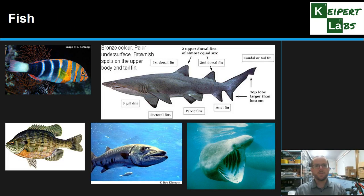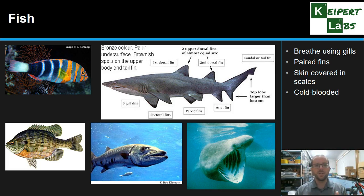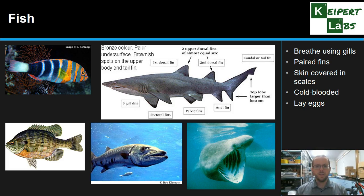Lastly, we have fish. Fish breathe using gills and have paired fins. Their skin is covered in scales, unlike the other vertebrates. They are cold-blooded, with their temperature regulated by the environment — specifically, the temperature of the water dictates their body temperature. This is very energy efficient, but it means water temperature is crucial to a fish's survival. If you've ever had fish in a tank, you know you need to use water at the right temperature or they will die. They lay eggs that are externally fertilised — typically fertilised in the water and looked after from there. Clownfish and sharks are examples of fish.